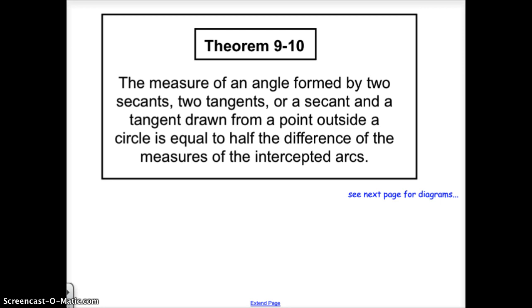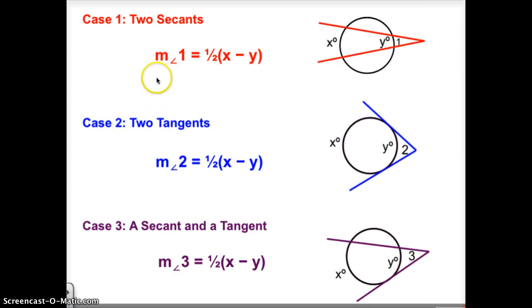So here are the three examples. Using two secants you can see that the secants go through the circle, angle one is equal to half of the difference between x and y. Same thing with the tangents, they're drawn outside the circle, angle two is also outside the circle, subtract x and y and divide by two.